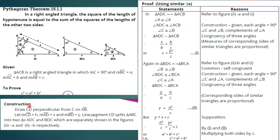For the construction, we draw CD perpendicular from C onto AB, meeting AB at D, forming a 90 degree angle at D. We assign measure CD equal to h, measure AD equal to x, and measure BD equal to y.